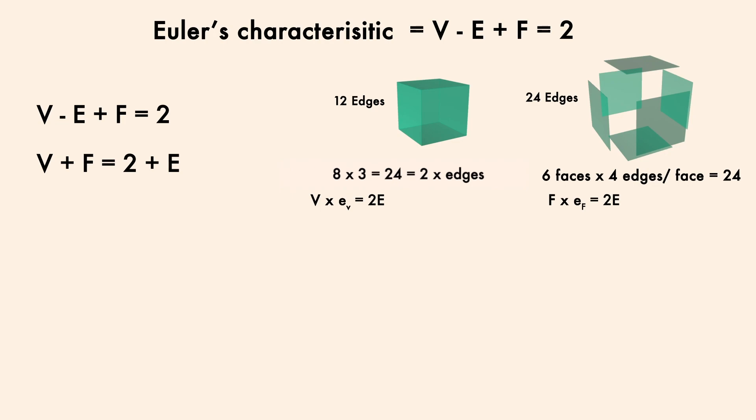Then I'm going to solve for F in that first equation, which would give us 2E over little e sub f. And then I'll solve the other equation for V, which would yield 2E over little e sub v. I can then plug those into Euler's formula for V and F, which gives this expression.